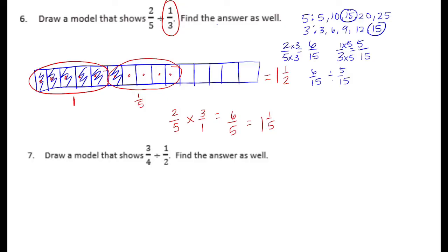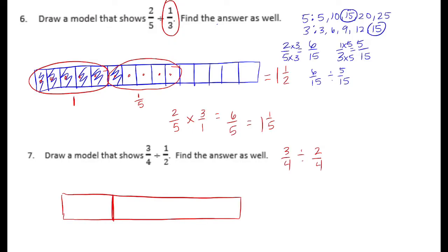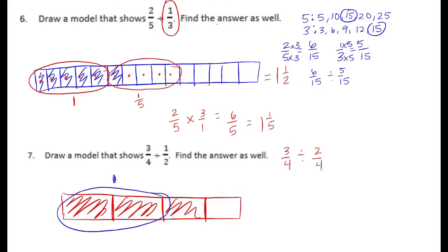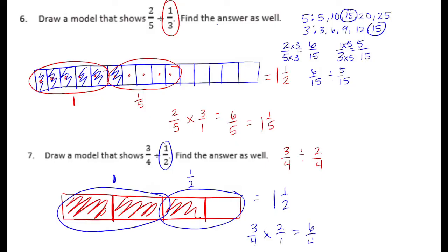You can always check it if you're asked to draw a model by using invert and multiply. And number 7: draw a model that shows 3 fourths divided by 1 half. Find the answer as well. I'll find a common denominator for 3 fourths and 1 half — it would be 4 — so I can leave 3 fourths alone, and 1 half is equal to 2 fourths. I'll draw 3 fourths and shade in 3 of them, then divide them into groups of 2 fourths. There's one group, and another group but only 1 out of 2 is shaded, so this equals 1 and 1 half. Double checking: 3 fourths times 2 over 1 gives 6 fourths, or 1 and 2 fourths, which equals 1 and 1 half.